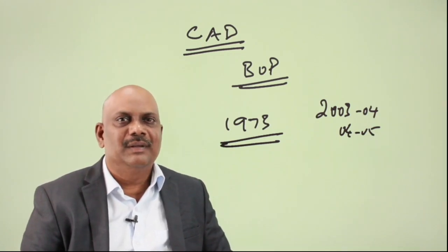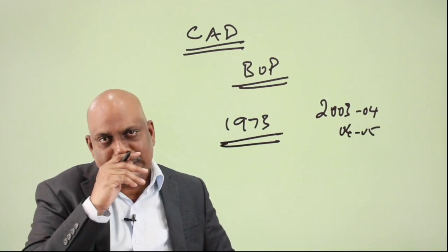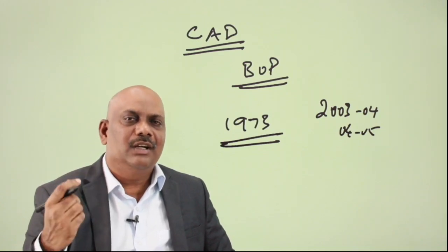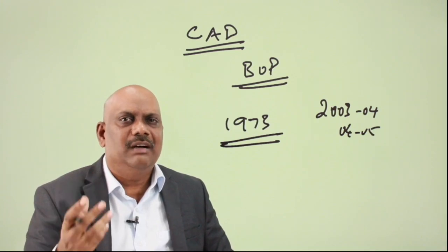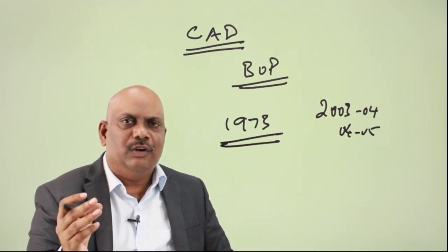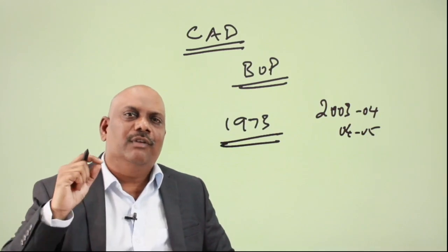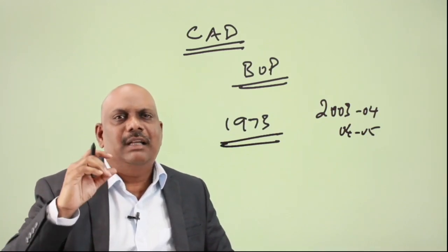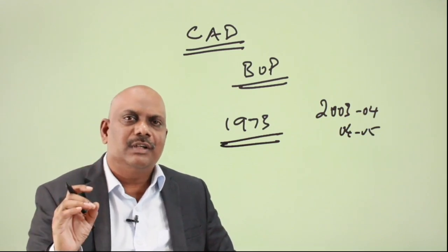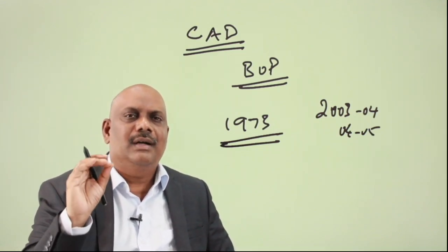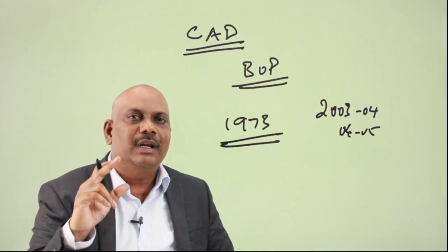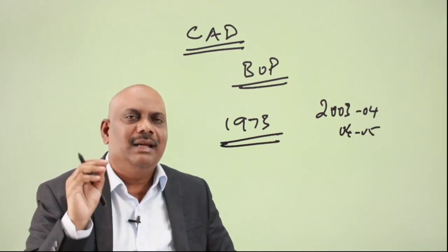After that brief positive, the current account became negative again, turning positive only between 2003-04 and 2004-05, this time because of our extraordinary performance in the service sector and service exports. But again, because of the surge in crude oil prices and large-scale gold imports after liberalization, our current account turned negative once more. Understanding what sectors are influenced when current account becomes too negative is essential in this series of lectures.